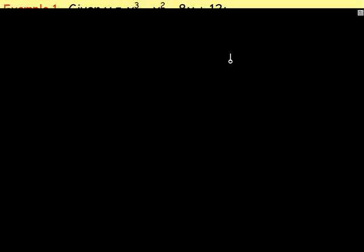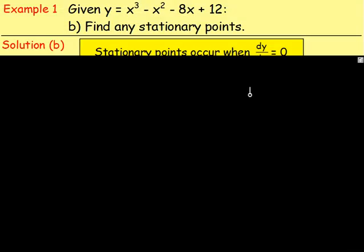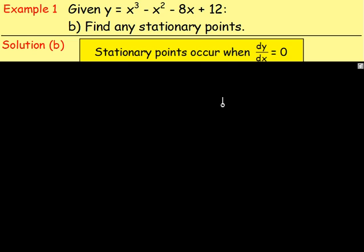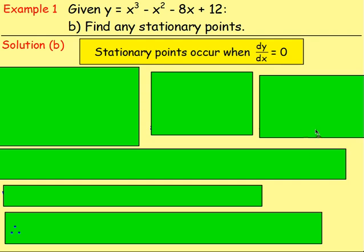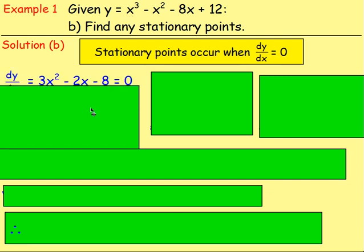Part B. Find the stationary points. How do you get stationary points? Well, remember from the differentiation chapter, stationary points occur when dy by dx equals 0. So from here you need to differentiate. So differentiate y with respect to x. So dy by dx would equal, bring the power down, take one off the powers. So you would have 3x squared minus 2x minus 8. And that would equal 0 because stationary points occur when dy by dx equals 0.